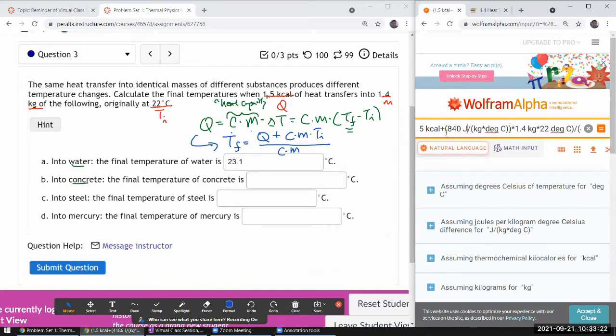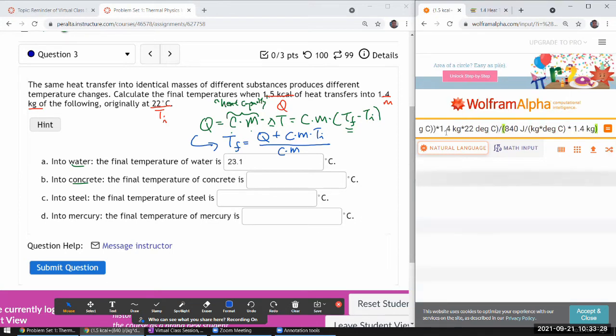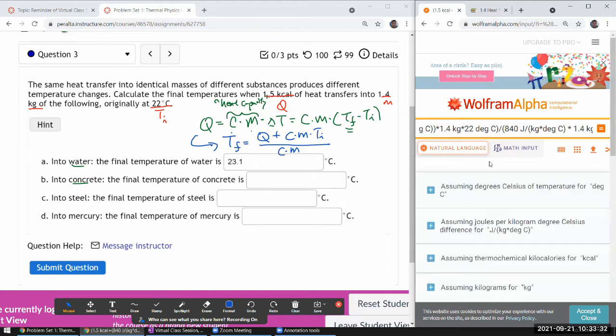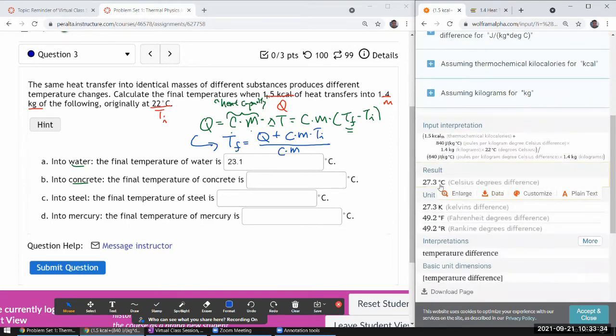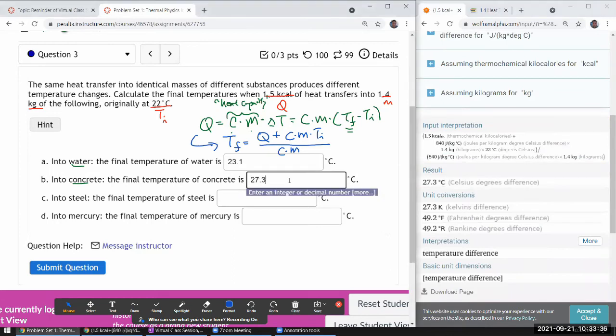Oh, and this is the other thing that Wolfram Alpha is nice for. You can edit your input, so when you have to just change one thing, you don't have to retype the whole other things. Okay, 27.3.